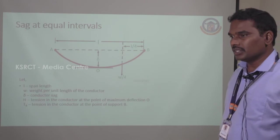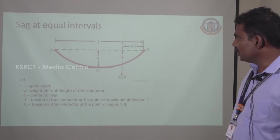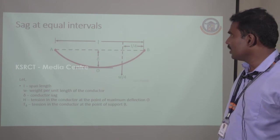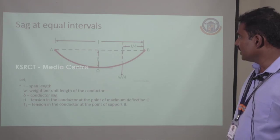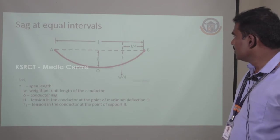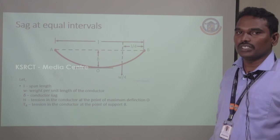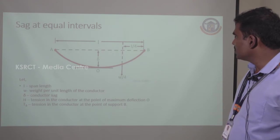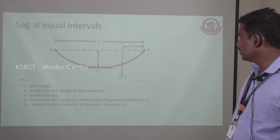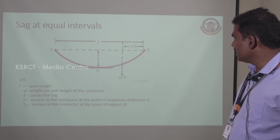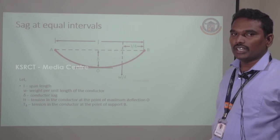In this topic, we are going to discuss about the SAG of equal interval and unequal interval. For equal interval, points A and B represent the conductors of two towers. Point O represents the lowest point on the conductor, and L represents the span length, which is the tower-to-tower distance. W is the weight per unit length of the conductor. H is the tension in the conductor at the lowest deflection point O, and TB is the tension at the support point B.